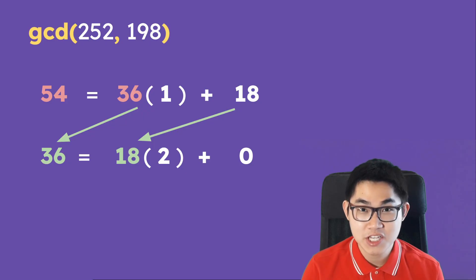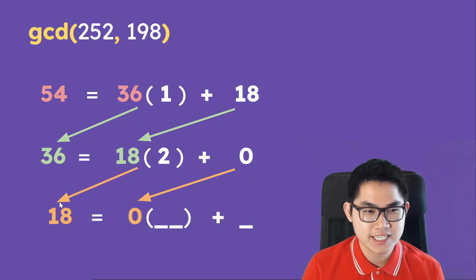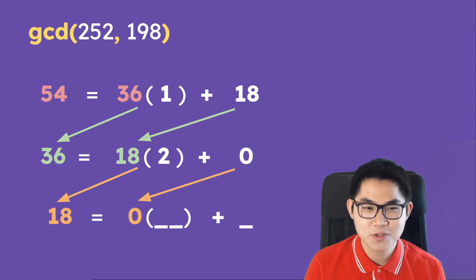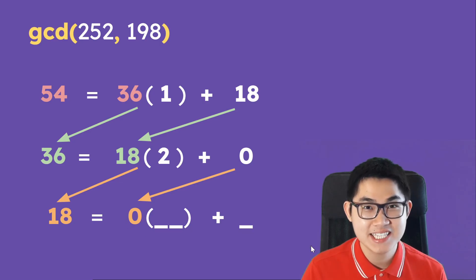Now, sometimes your teacher might want you to write one extra line. They might want you to bring this down here and then bring the 0 down here, and then this is where you actually stop. And that's just because when you write a computer program, the program stops when this number here is 0. So that's why you have to write one extra line. Last but not least, the GCD of 252 and 198 is going to be this number, which is 18.